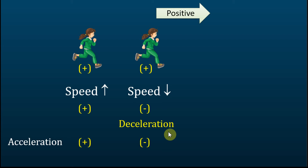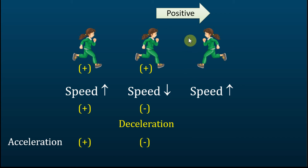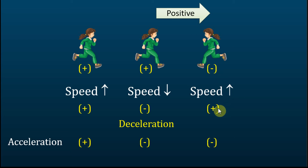Let's see the third case. Now the girl is running to the left, which means she is running in the negative direction. So the direction is negative. And she is running with an increasing speed. Therefore, the rate of speed change is positive. So in this case, is the acceleration positive or negative? The answer is that the acceleration is negative — if the direction is negative but the rate of speed change is positive, the acceleration is negative.